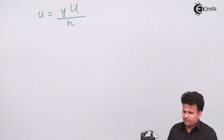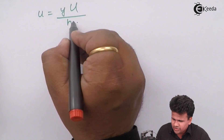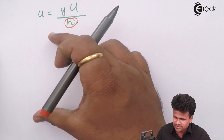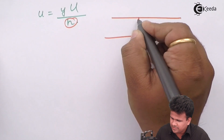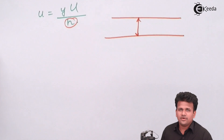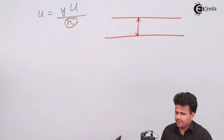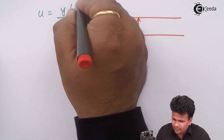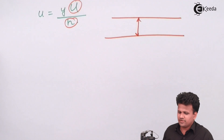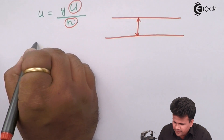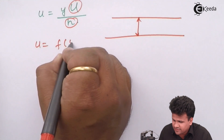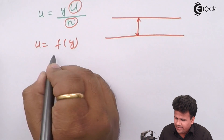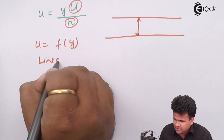If the height h remains constant and the maximum velocity U at the top surface also remains constant, then u is obtained as a linear function of y — the relationship between velocity and position is linear.